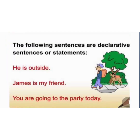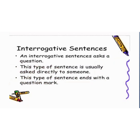More examples of declarative sentences are: He is outside. James is my friend. You are going to the party today. From these three sentences, you can understand that 'he', 'James', and 'you' are subjects, while the remaining part is the predicate, and there is a full stop at the end of all these sentences — subject, predicate, and a full stop.